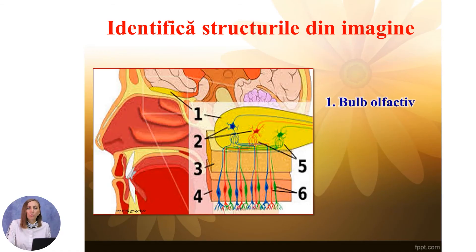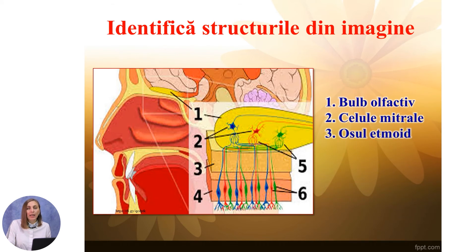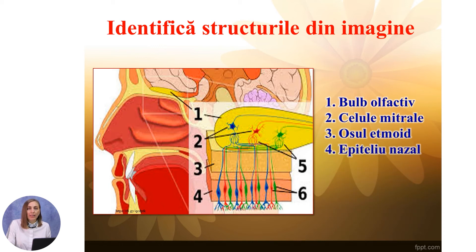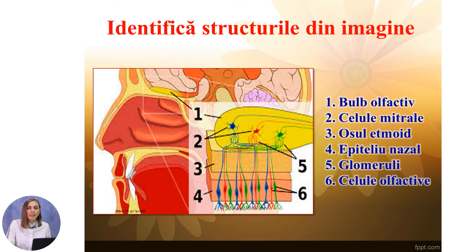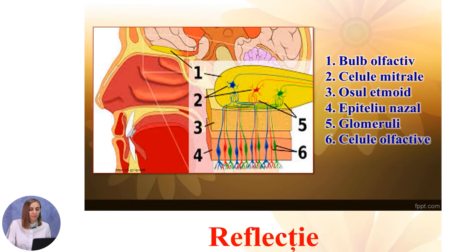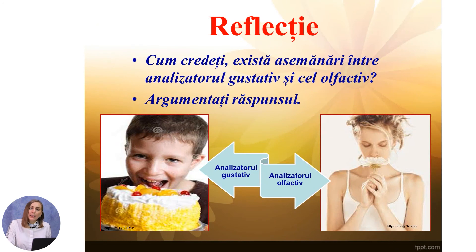Identifică structurile din imagine: 1. Bulb olfactiv, 2. Celule mitrale, 3. Osul etmoid, 4. Epiteliu nazal, 5. Glomerul, 6. Celule olfactive.